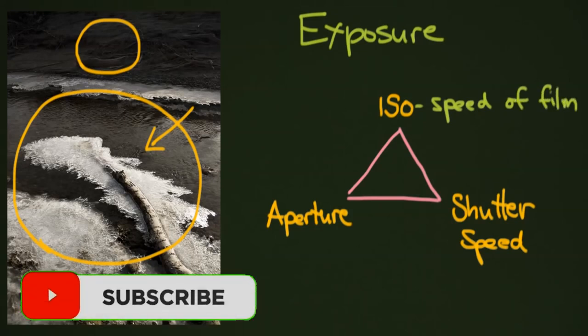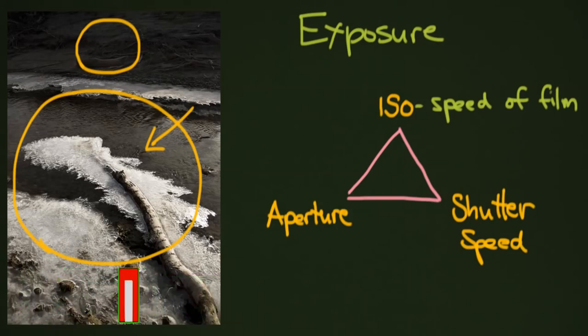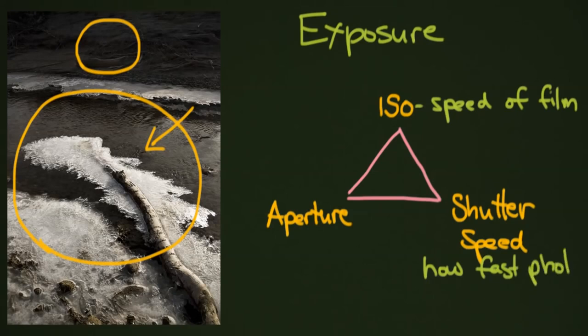And I'm just going to say film because that's a shorter way of saying it. Your shutter speed is how fast you take the photo. So how fast photo is made. And this is counted in hundreds of seconds. It's very quick often.